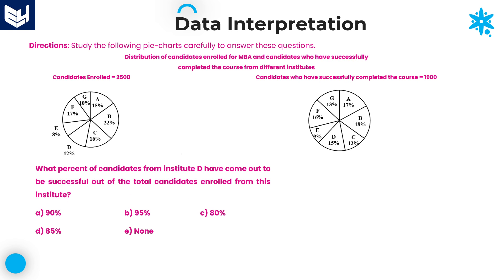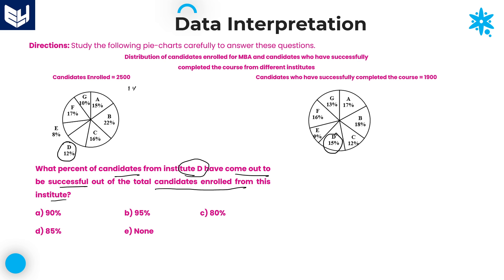Let us look at the second question: What percent of candidates from Institute D have come out to be successful out of the total candidates enrolled from this institute? One percentage value is equal to 25, and D has 12 percentage enrolled. So 12 into 25 equals 300. Therefore, 300 candidates are enrolled from Institute D.